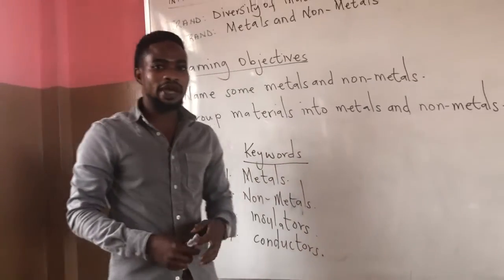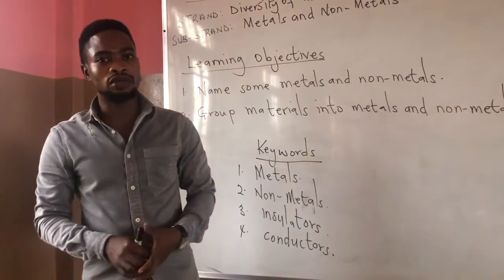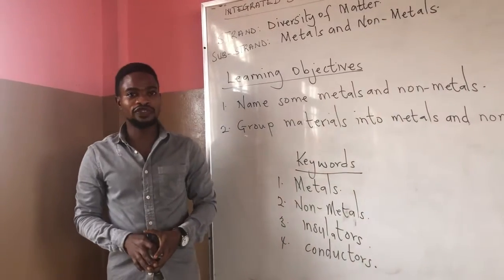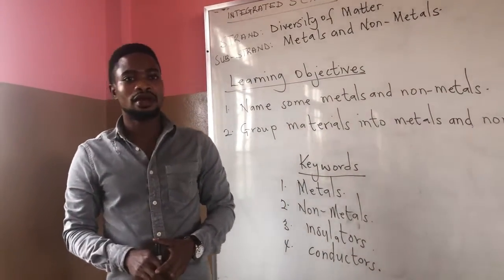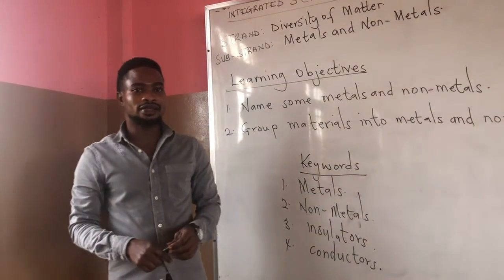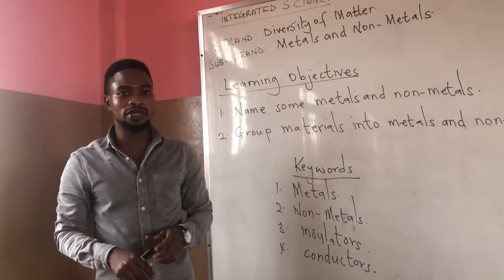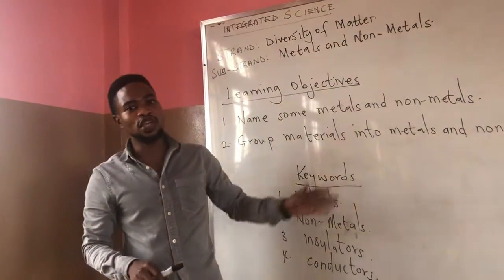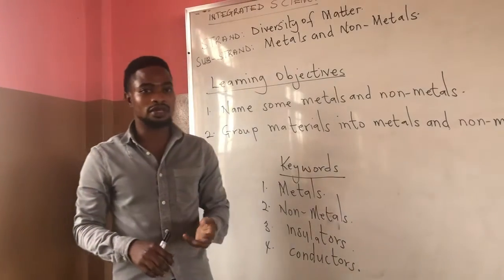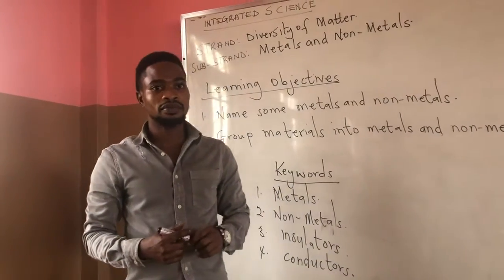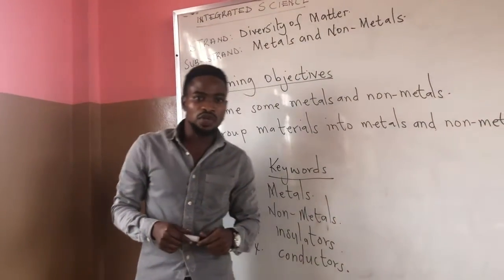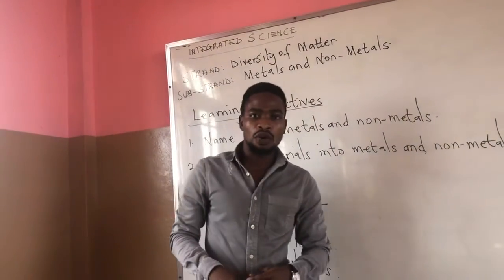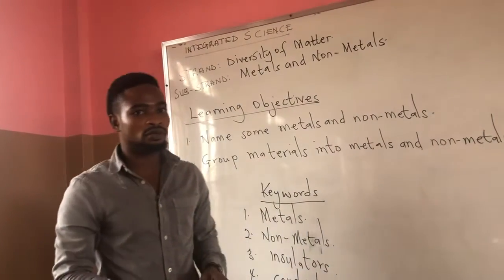Our today's lesson is based on metals and non-metals. If you look around in your living room, you will find tables, chairs, carpets, and curtains. Similarly, if you go to the kitchen, you will see utensils such as a knife, pressure cooker, chopping board, ladle, and kettle as well.